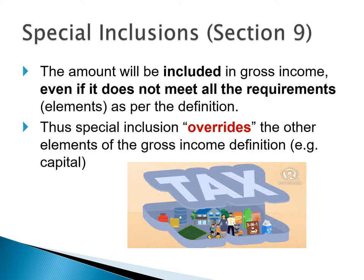Like the name says, they are specifically special — they need to be included. So, does Special Inclusions override the other elements of the gross income definition? For example, capital — this is probably the most common one. We know that if an item is of a capital nature, it should be excluded from gross income. But in terms of Section 9, there are specific items — Special Inclusions — that might be of a capital nature, and they still need to be included in gross income.